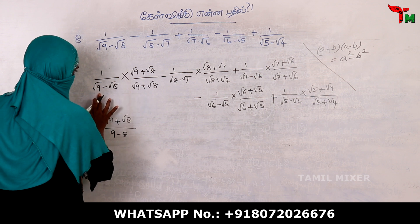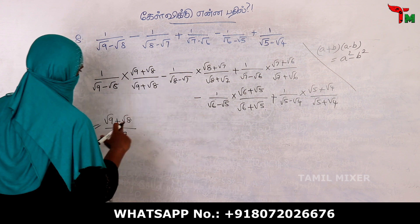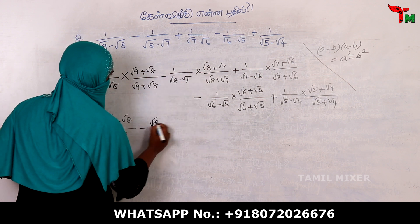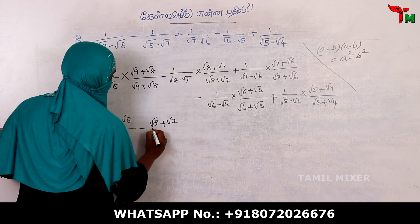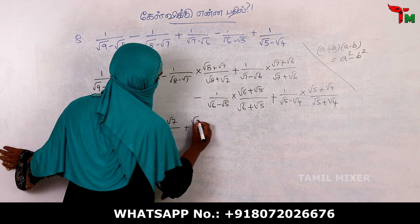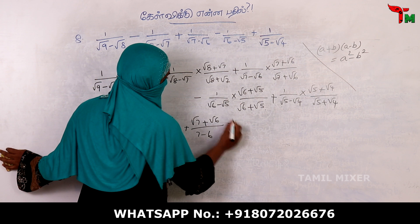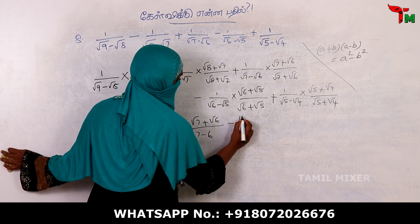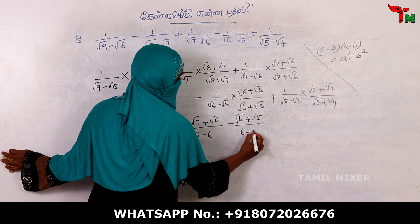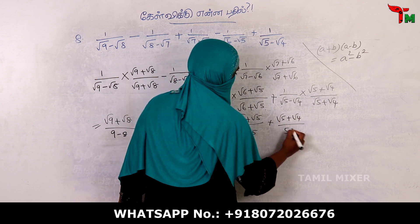We multiply by root 9 squared minus root 8 squared. Then root 9 squared cancels. We multiply through and each term simplifies accordingly.